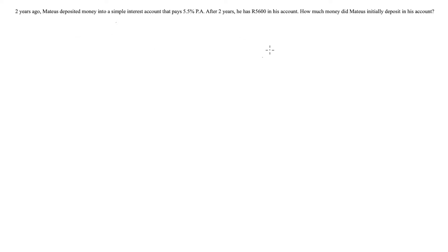Let's go over another example. Two years ago, Matthias deposited money into a simple interest account that pays 5.5% per annum. After two years, he has 5,600 Rand in his account. How much money did Matthias initially deposit? This question is different — instead of finding the final amount, we are asked to determine the initial deposit, meaning we need to find the principal amount P. Let's start by writing down our A-PIN formula: A equals P times 1 plus I times N.